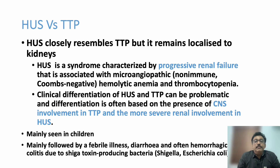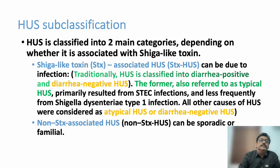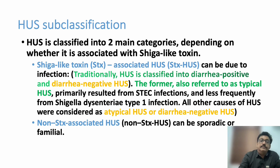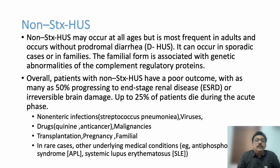Shiga toxin-producing syndrome is associated with HUS, while ADAMTS13 protein deficiency is the major cause of TTP. HUS is sub-classified into two types: Shiga-like toxin induced HUS and non-Shiga toxin induced HUS. The non-Shiga toxin type can be sporadic or familial; the familial form is associated with genetic abnormalities in complement regulatory proteins.